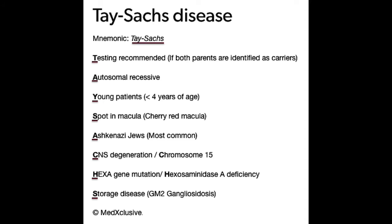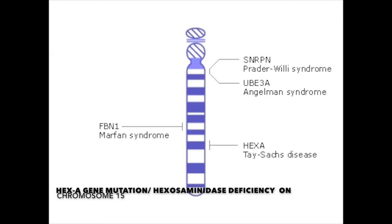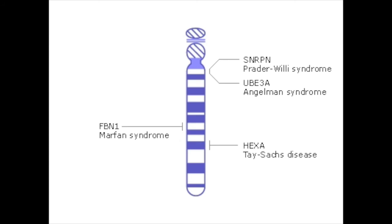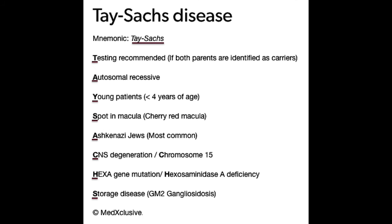C stands for CNS degeneration. N stands for chromosome 15. H is for hex A gene mutation — hexosaminidase A deficiency. Lastly, it is a storage disease, that is, GM2 gangliosidosis accumulates in the brain.